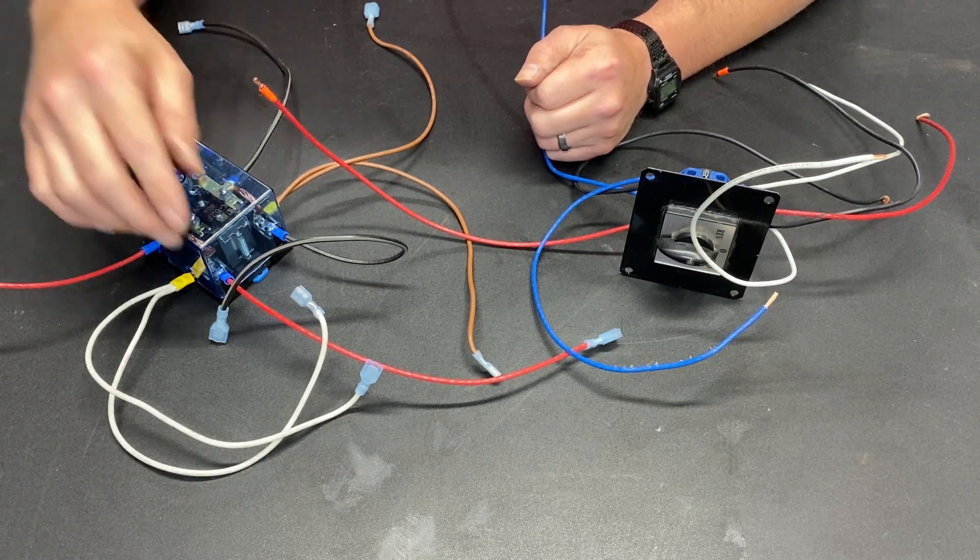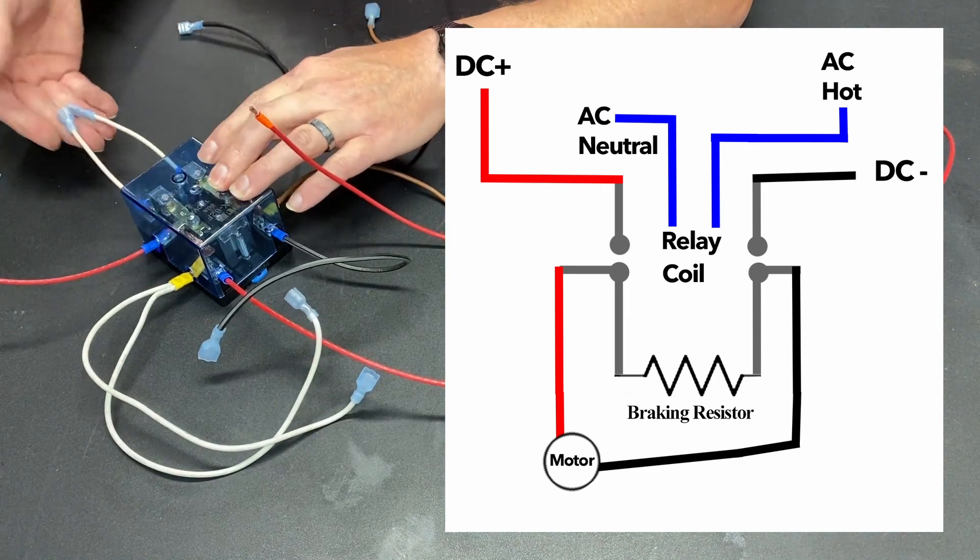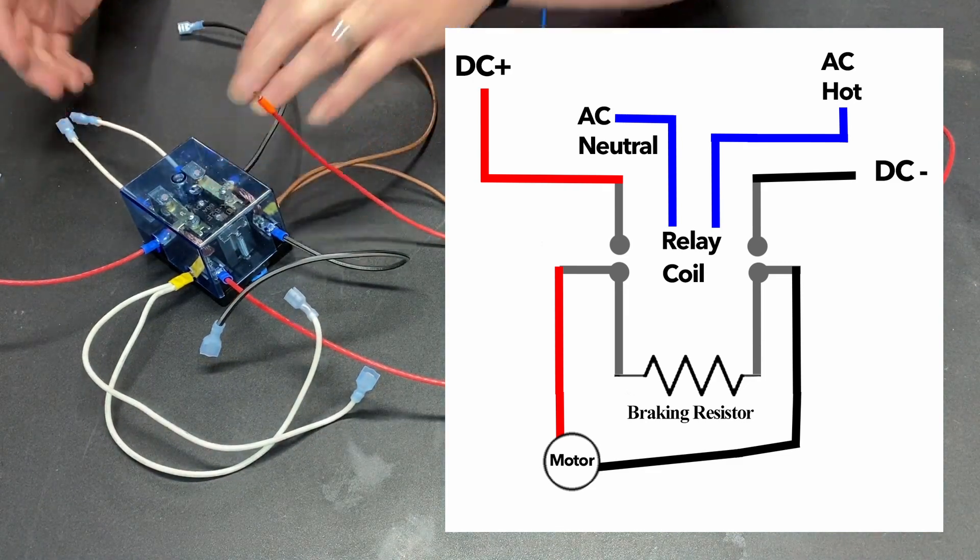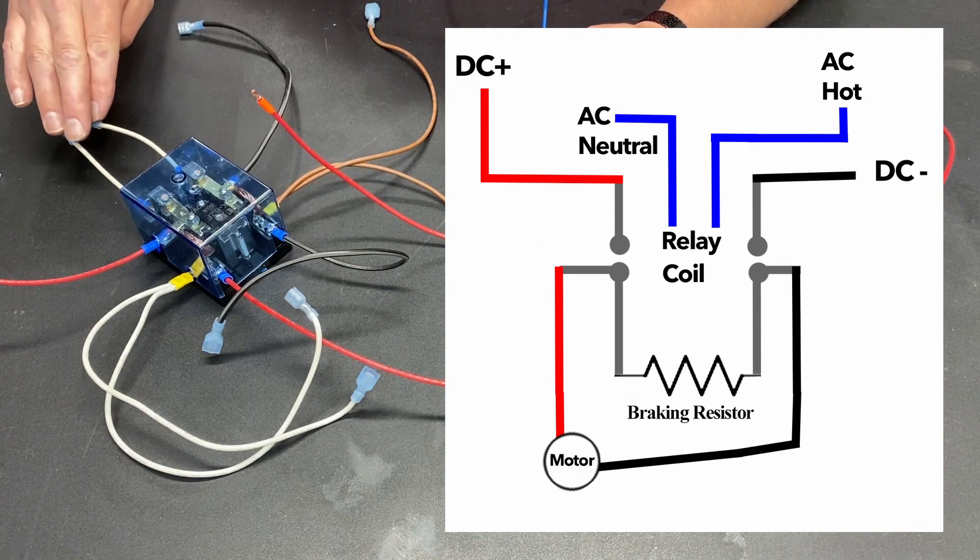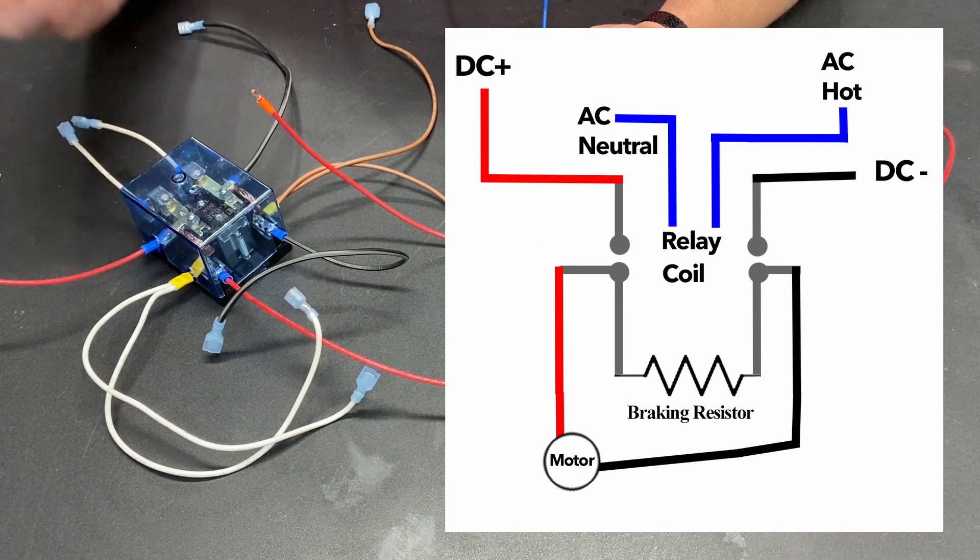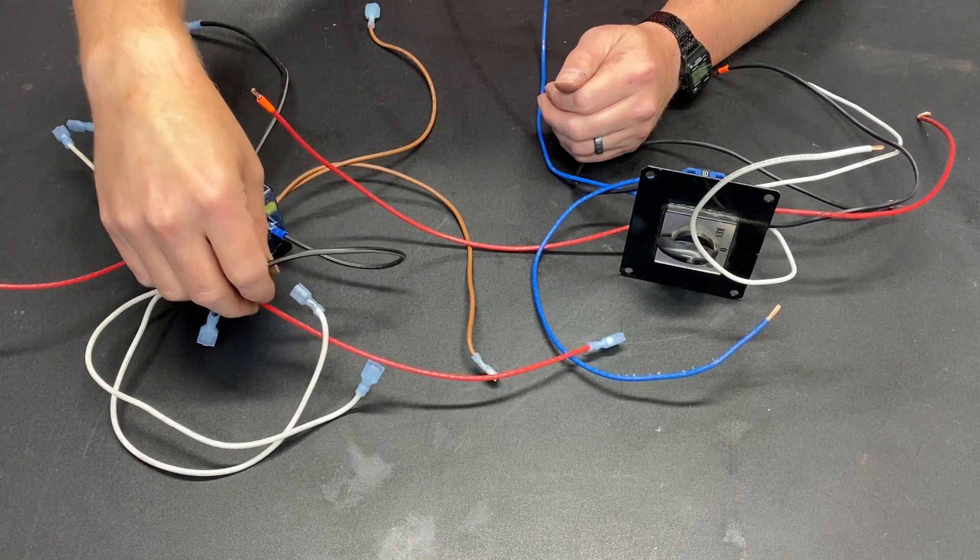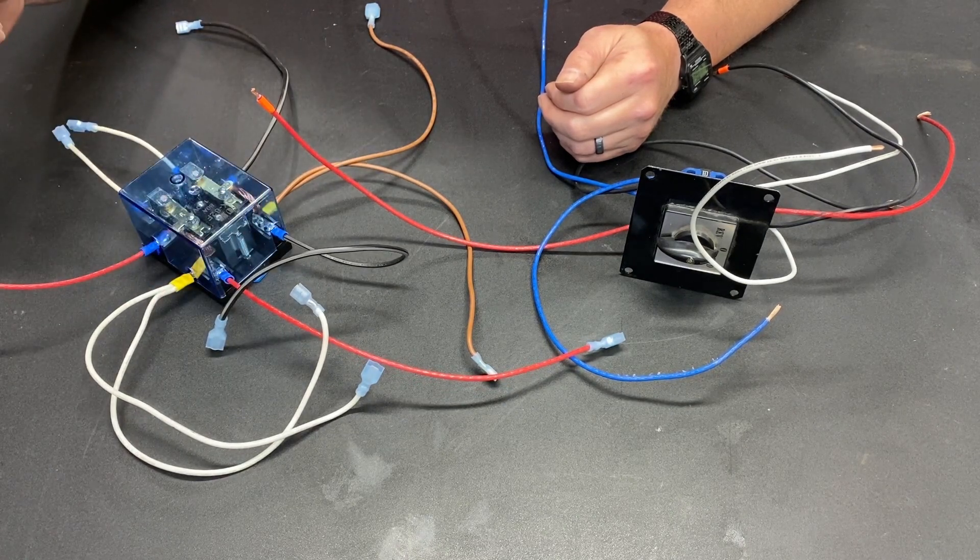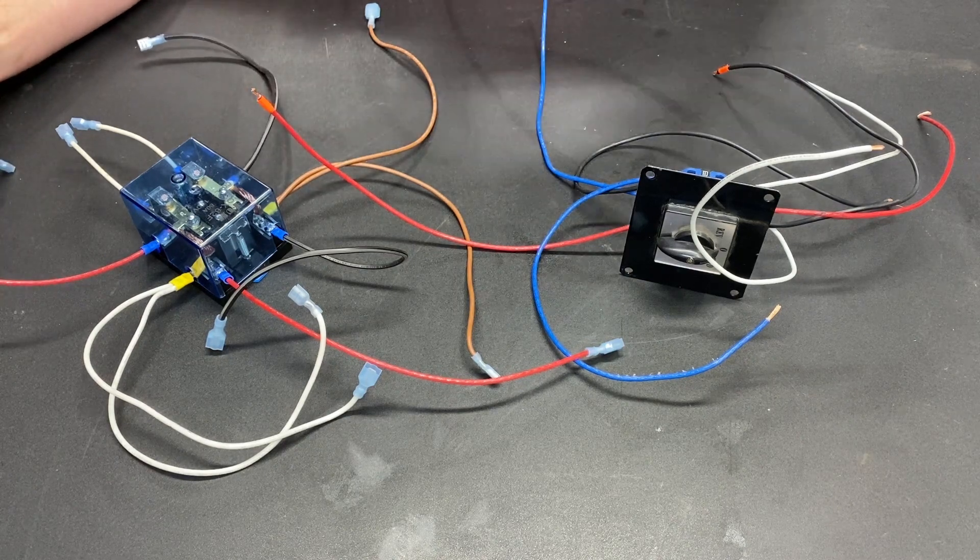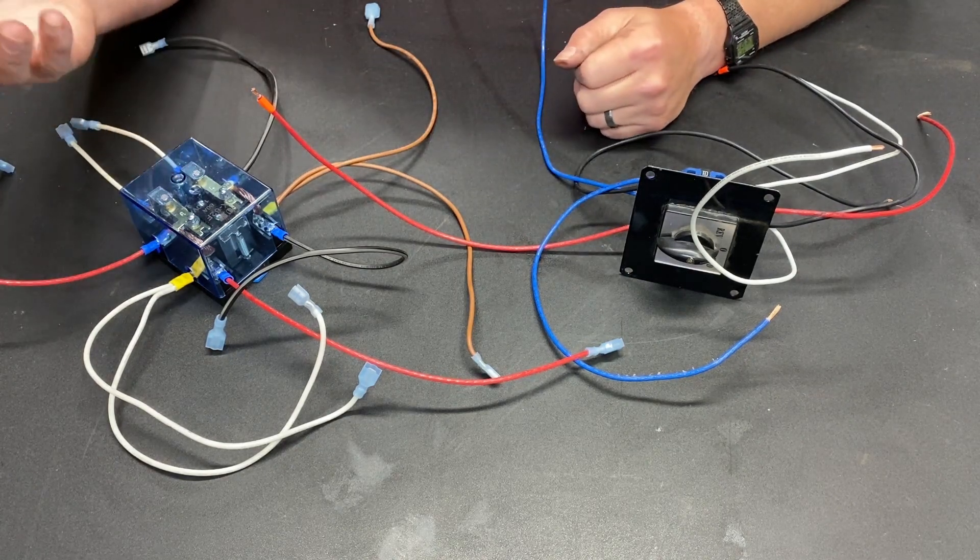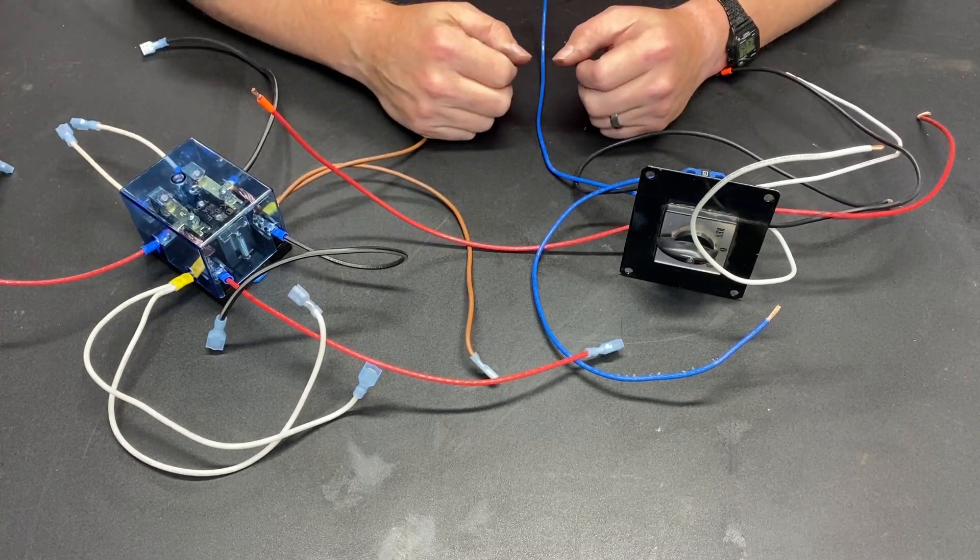By connecting the motor to these two terminals right here and connecting my resistor to these two right here, when it's in the resting position the motor is connected to the resistor and that creates the braking action. When you energize the coil it connects the motor to the power inputs and that sends power to the motor. So I thought piece of cake, simple. We attach this relay and we have an automatic brake.